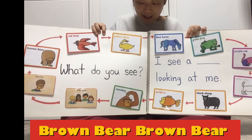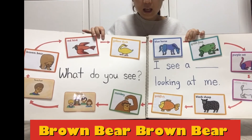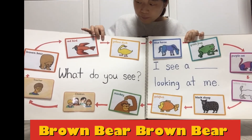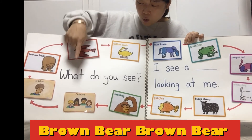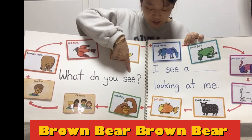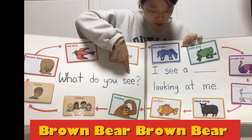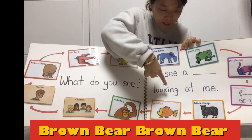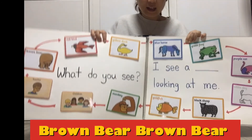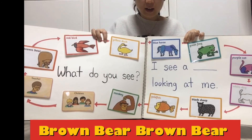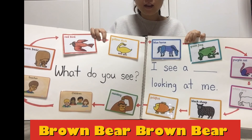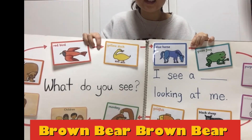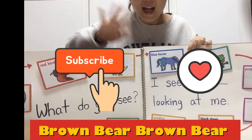Good, everybody! So this is a song about Brown Bear, Brown Bear, What Do You See? Practice the question: what do you see? And answer the question: I see a mmm looking at me. Can you practice this song and practice colors and animals? Good job, everybody! I'll see you next time. Bye-bye!